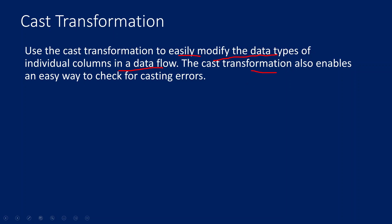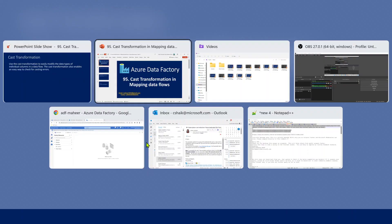Not only that, using cast transformation you can also enable an easy way to check casting errors. If there is a column, say column 1, and for some reason you are not able to cast the data type of that column, then those rows will be flagged as errors very easily. Let me show you this practically in Azure Data Factory.